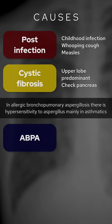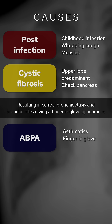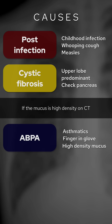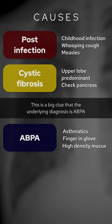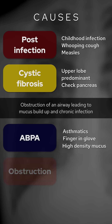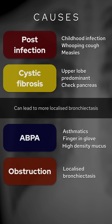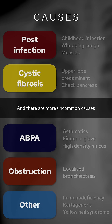In allergic bronchopulmonary aspergillosis (ABPA) there is hypersensitivity to aspergillus mainly in asthmatics, resulting in central bronchiectasis and bronchoceles giving a finger-in-glove appearance. If the mucus has high density on CT, this is a big clue that the underlying diagnosis is ABPA. Obstruction of an airway leading to mucus buildup and chronic infection can lead to more localised bronchiectasis, and there are more uncommon causes.